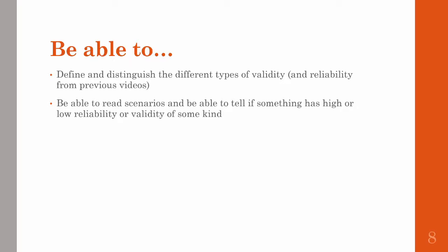To take home and keep in mind: make sure you're able to define and distinguish the different types of validity and reliability, and also the levels of measurement we've covered over the past few videos. Study and be prepared to read scenarios and be able to identify at what level of measurement something is at, and whether it would have high or low reliability or validity. That's it for this video, and we'll see you all next time.